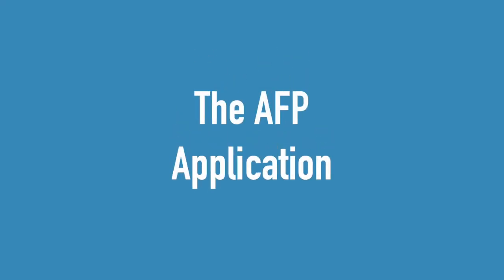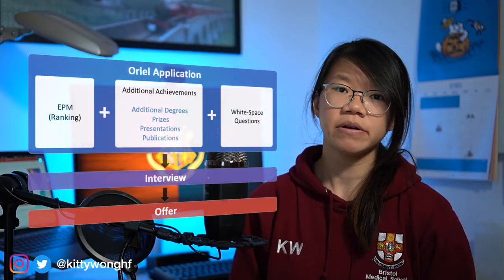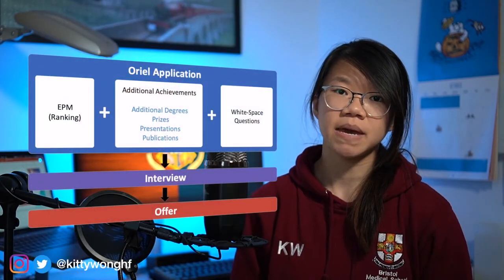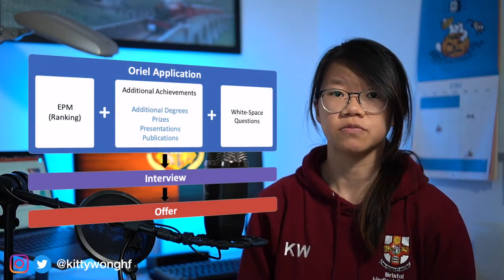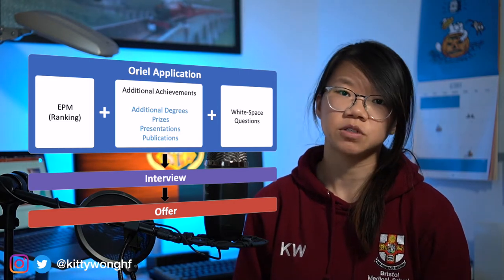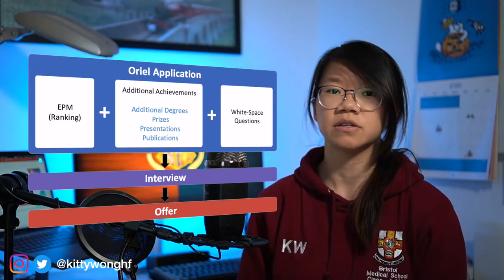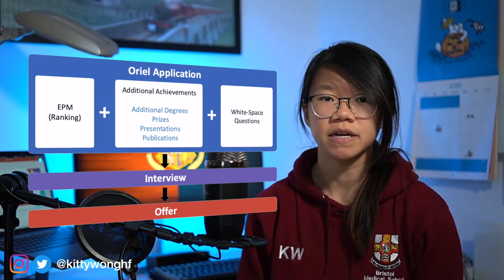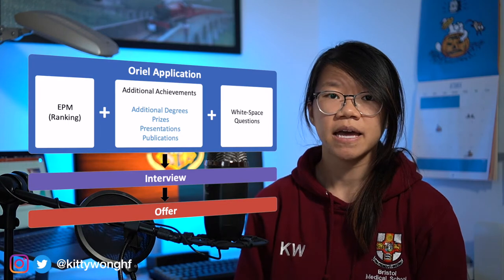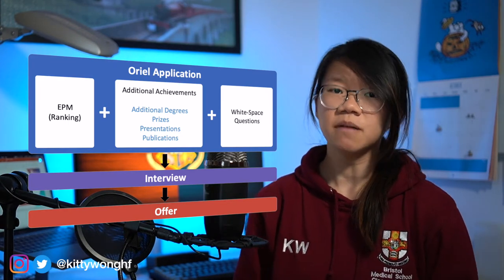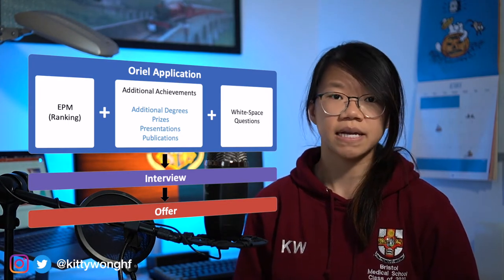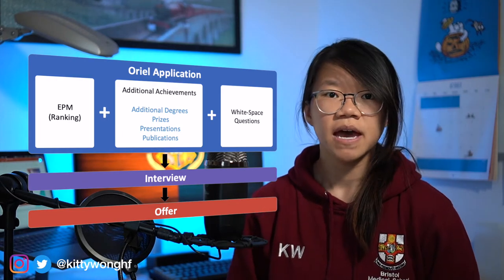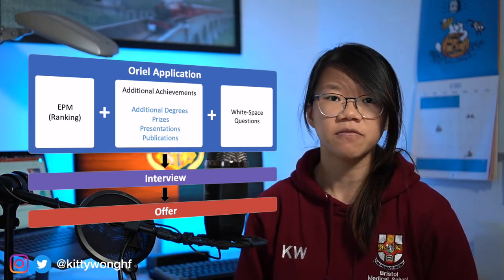So first of all, recapping the AFP application process. You have your OREO application which is made up of your EPM — your medical school ranking — your additional achievements which are your additional degrees, publications, presentations and prizes, and your white space questions. A combination of these three things will get you shortlisted for an academic interview and if you're successful you then get an offer.